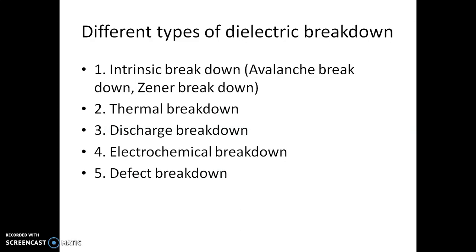Now let us see the different types of dielectric breakdown mechanisms. The first one is intrinsic breakdown, which is a kind of avalanche breakdown or Zener breakdown, as we study in the case of diodes, where the applied electric field in the reverse direction — reverse bias of the diode — may damage the diode. Thermal breakdown also occurs sometimes due to the temperature of the dielectric.